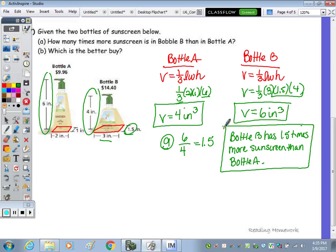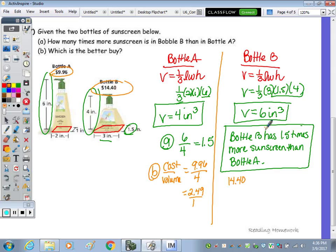And then B, which is the better buy? For bottle A, we're going to look at the cost per volume. This bottle costs $9.96. So if we take $9.96 and divide it by a volume of 4, we end up with a unit price of $2.49 per 1 cubic inch. Bottle B is a cost of $14.40. So if we take $14.40 divided by 6, we'll get a unit cost of $2.40 to 1 cubic inch.